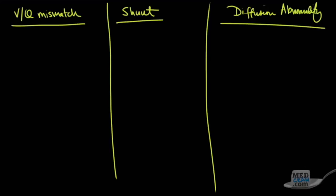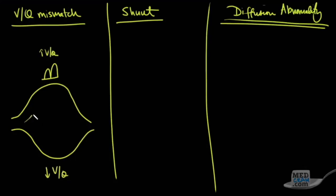V/Q mismatch is now coming to the video. And if the COVID-19 solution is the diffusion abnormal, you can find a video on YouTube. This is a good one to know about the V/Q mismatch and the V/Q ratio. The V/Q ratio is ventilation and perfusion ratio.